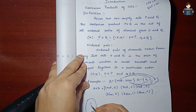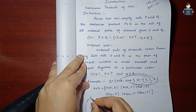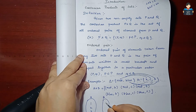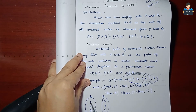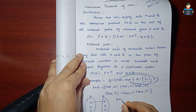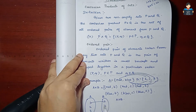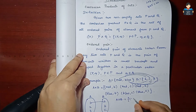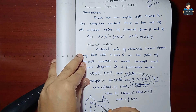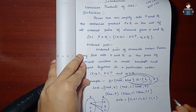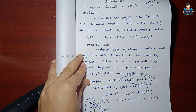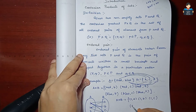Now, set A = {1, 2, 3} and set B = {A, B, C}. For A cross B: (1,A), (1,B), (1,C), (2,A), (2,B), (2,C).